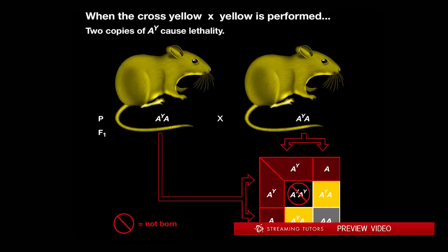So what is going on here if that's the case? Well, if you do the cross yellow times yellow—so now we know what that means—each parent can donate AY and A, right? So let's follow that: AY and A, AY and A, and let's just fill in the boxes.